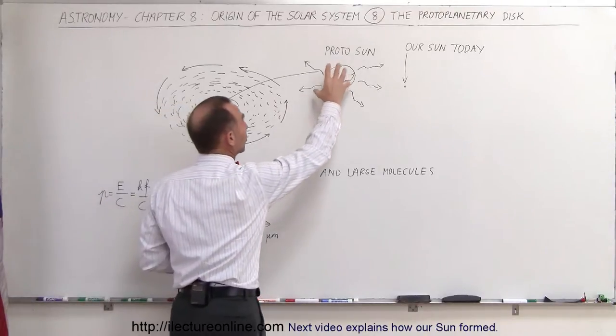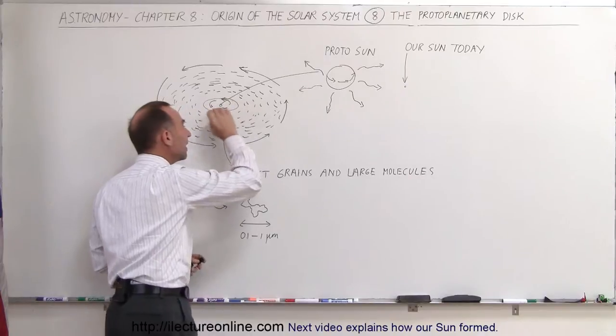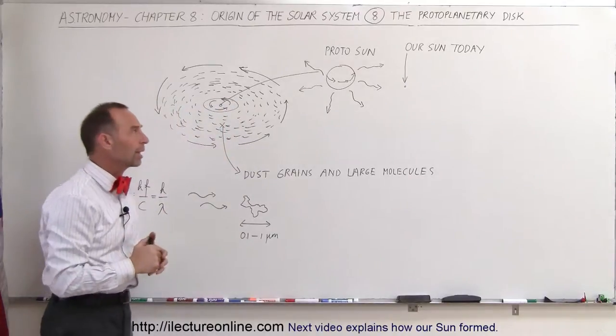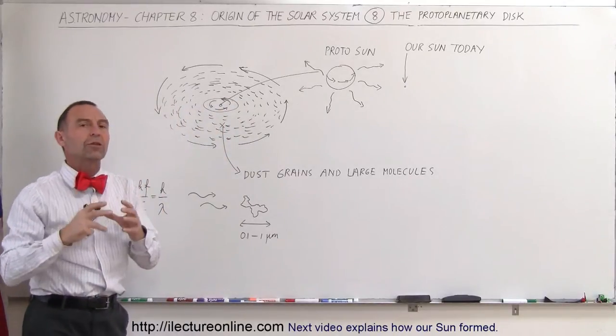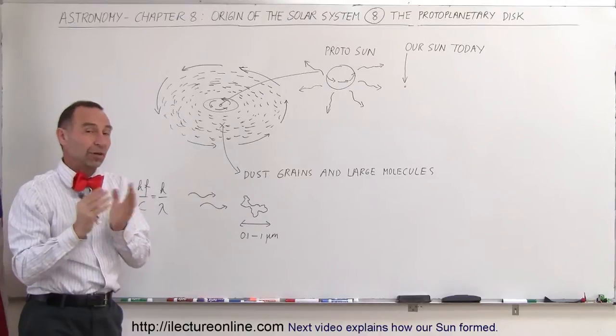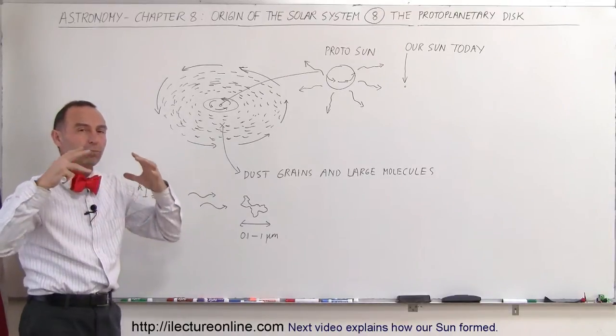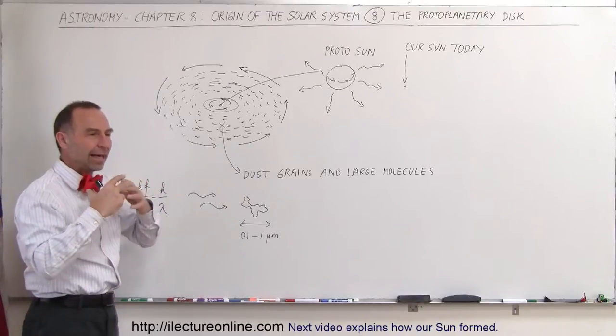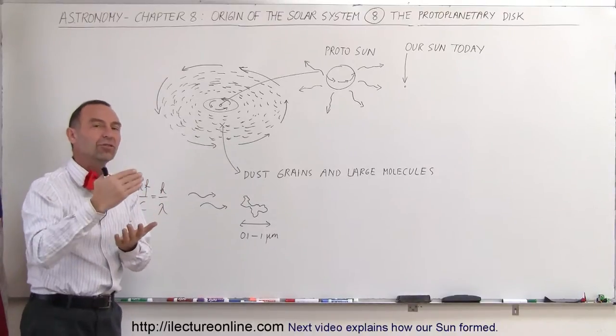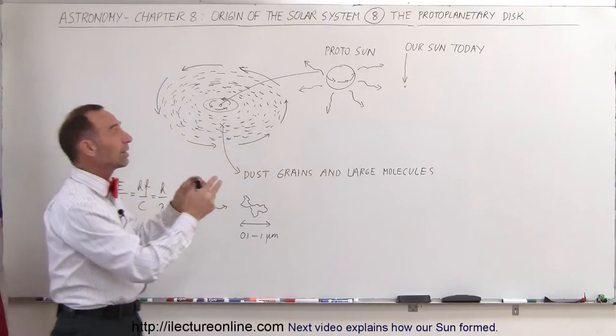Now here we have what we call the proto-sun at the center of this dense region of the protoplanetary disk. A star would begin to form, not yet a real star because nuclear fusion wasn't part of the equation yet, but it was a large ball of gas and dust and heat with temperatures that were thousands of degrees to the point where radiation began to come forward.